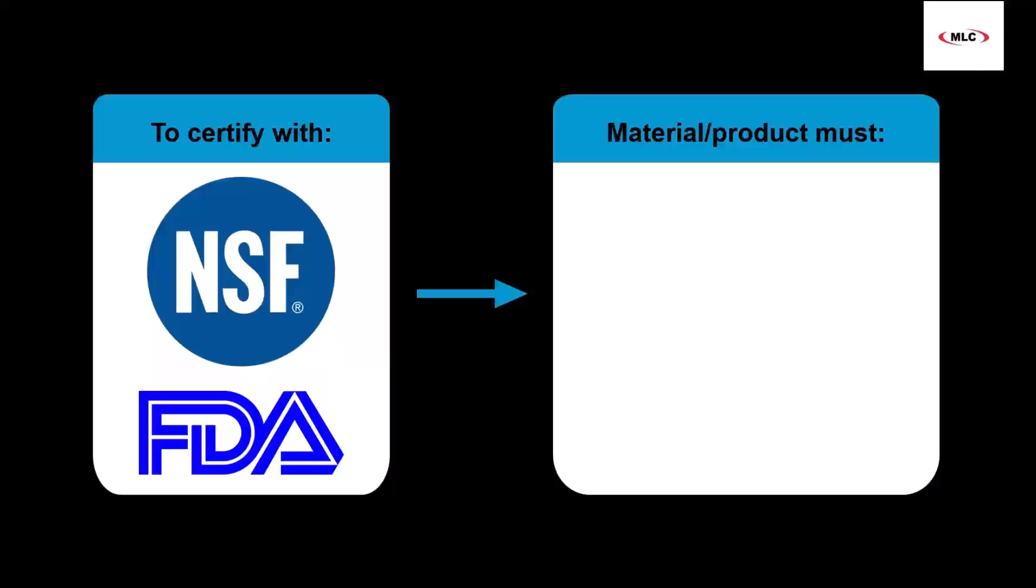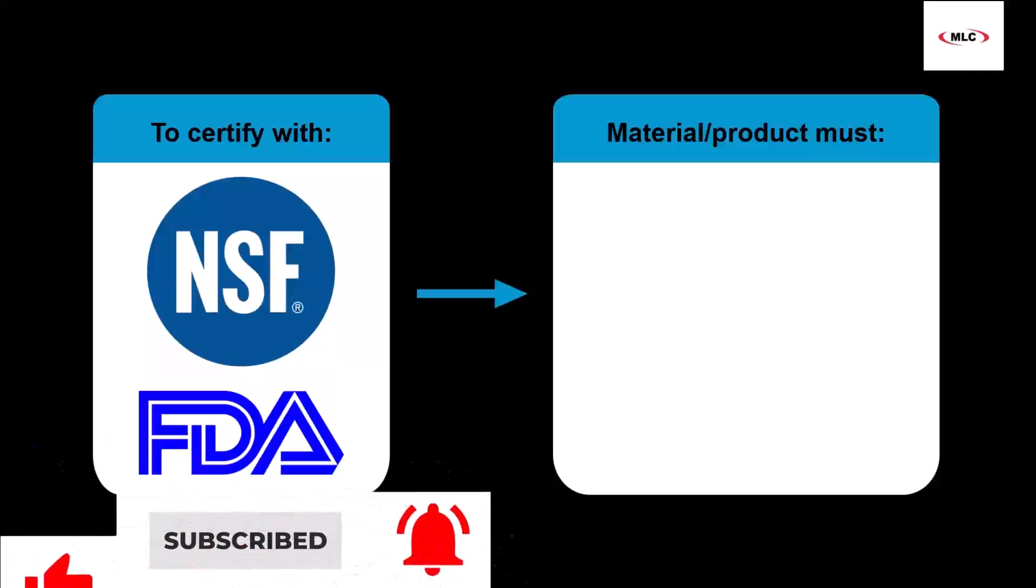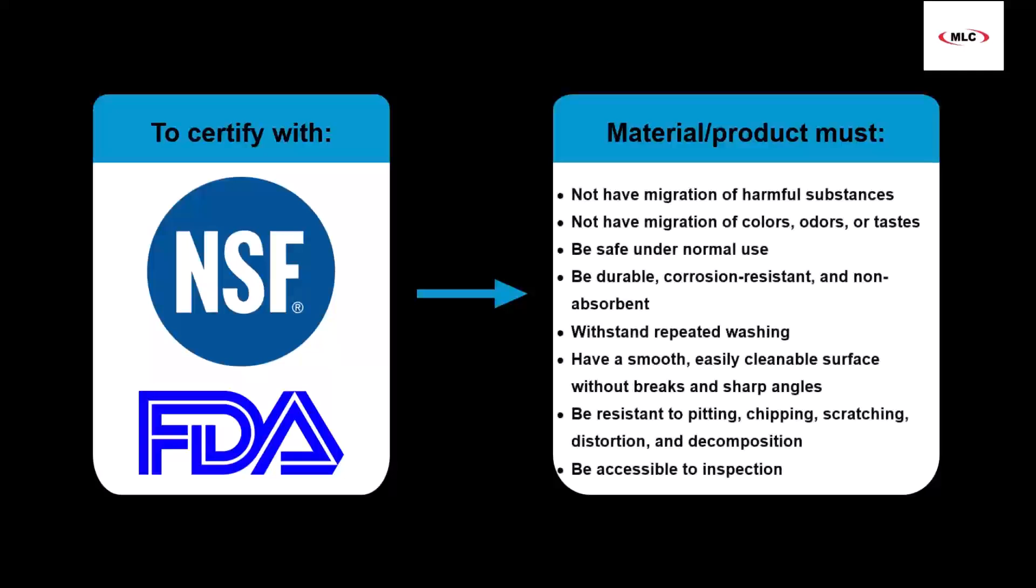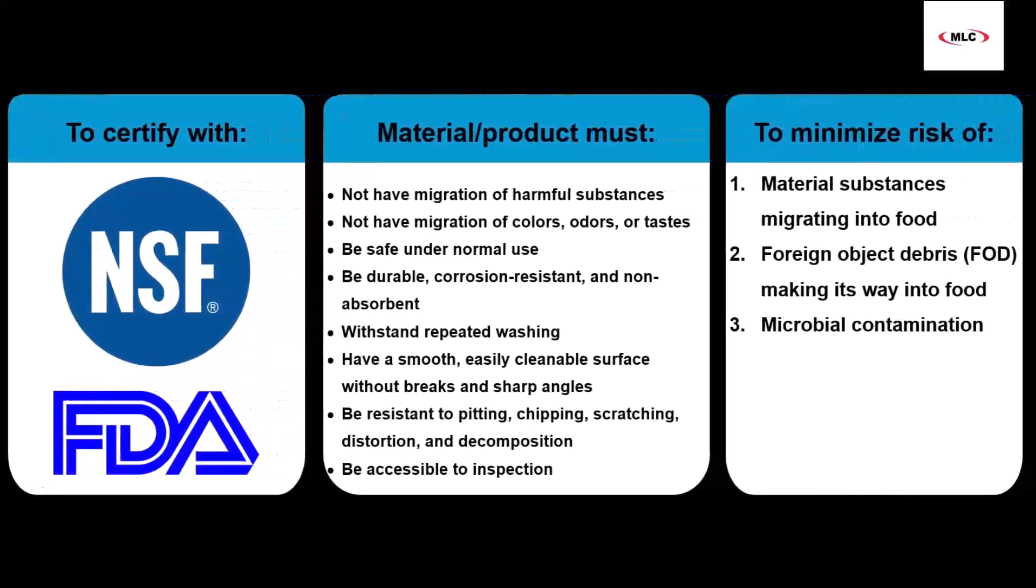For food safety, the NSF and FDA certify based on migration risk. For a material or product to be food safe, it must adhere to the following listed here. These all contribute to risk mitigation, the risks being migration of substances within the material into food, foreign object debris making its way into food, and microbial contamination.